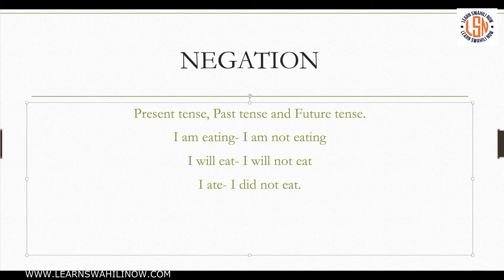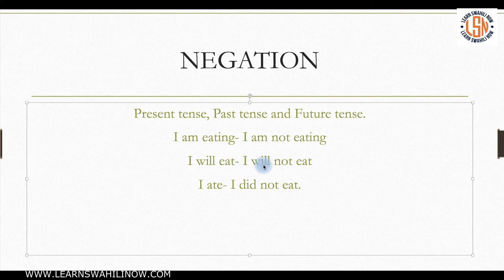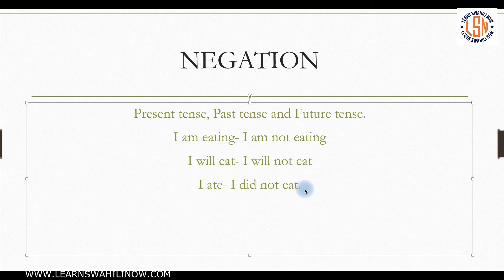Today we're going to be talking about negation. What is negation? It's really when you need to say the negative form of a sentence. For example: 'I am eating' — the negation for that will be 'I am not eating.' 'I will eat' becomes 'I will not eat.' 'I ate' becomes 'I did not eat.' We're going to work with the personal pronoun prefixes and all three tenses.